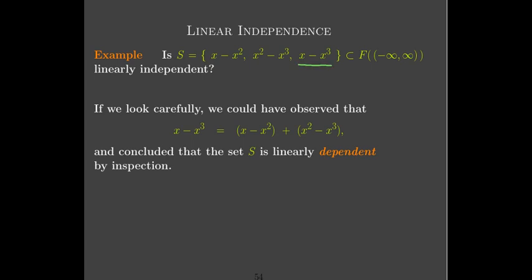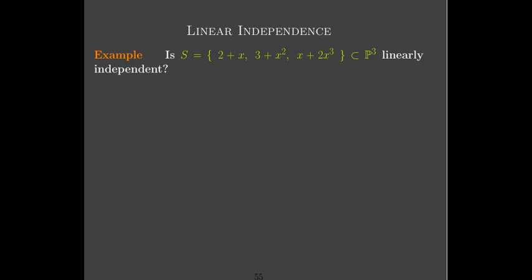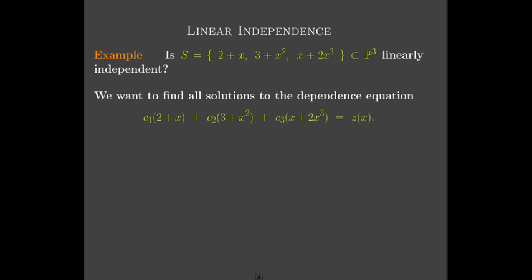A faster approach: by inspection, the third polynomial is actually the sum of the first two. That observation alone allows us to conclude immediately that the set S is linearly dependent.